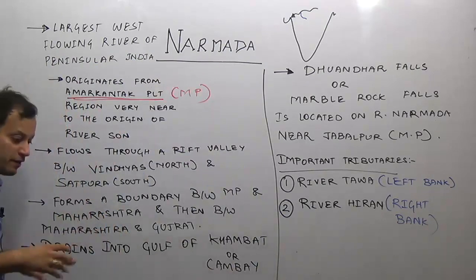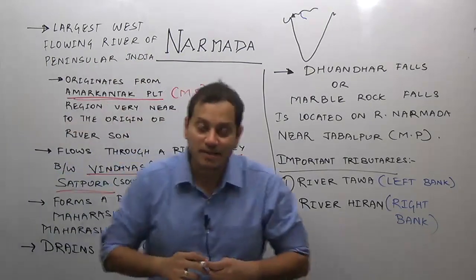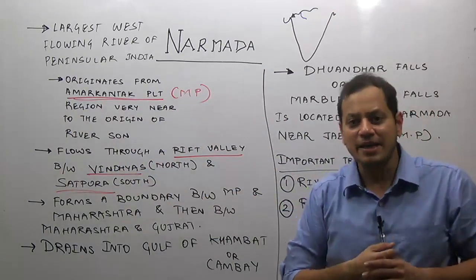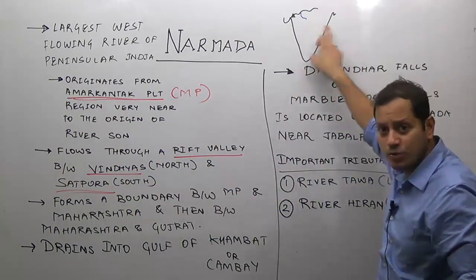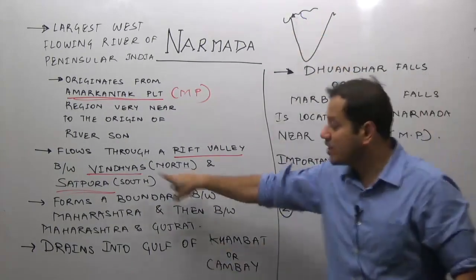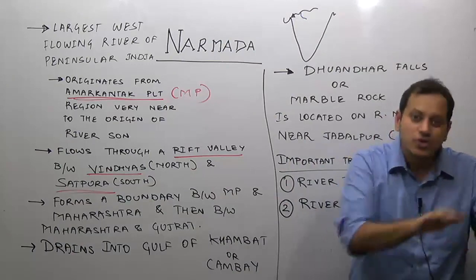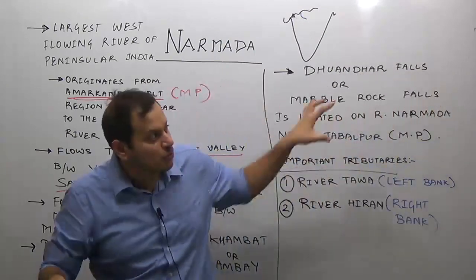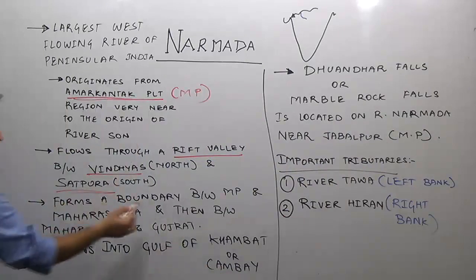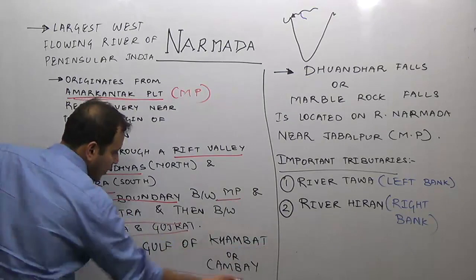River Narmada flows through a rift valley between Vindhyas to the north and Satpuras to the south. If asked in the exam why Narmada flows west while most major rivers — Godavari, Krishna, Kaveri, Mahanadi — flow east, the answer is because the rift valley slopes towards the west, while the Indian peninsula generally slopes towards the east. It forms a boundary between Maharashtra and MP, then between Maharashtra and Gujarat, before draining into the Gulf of Cambay.